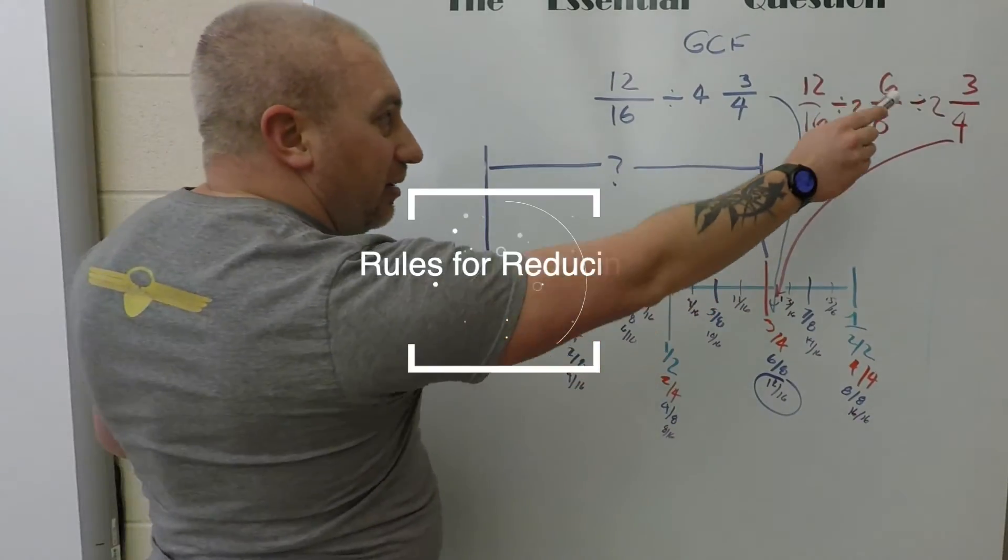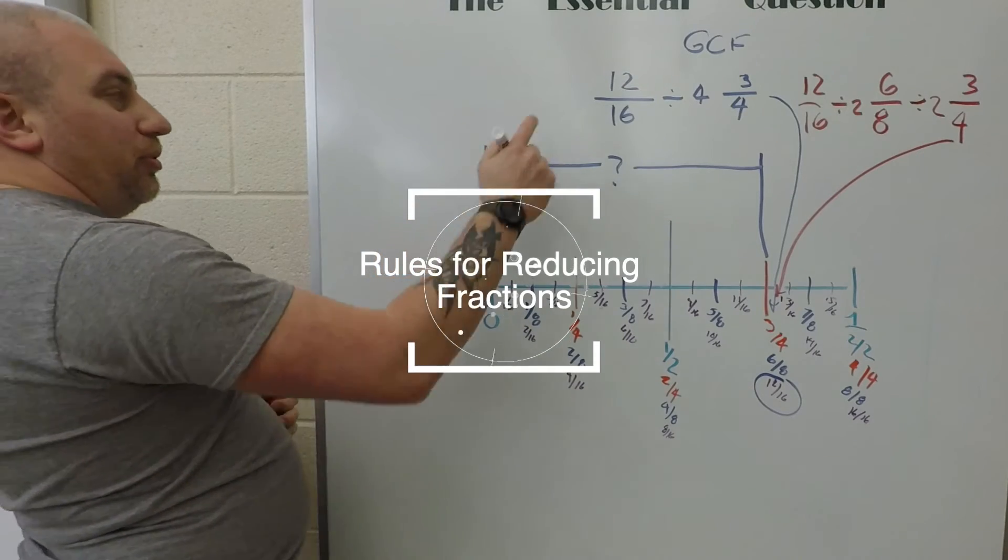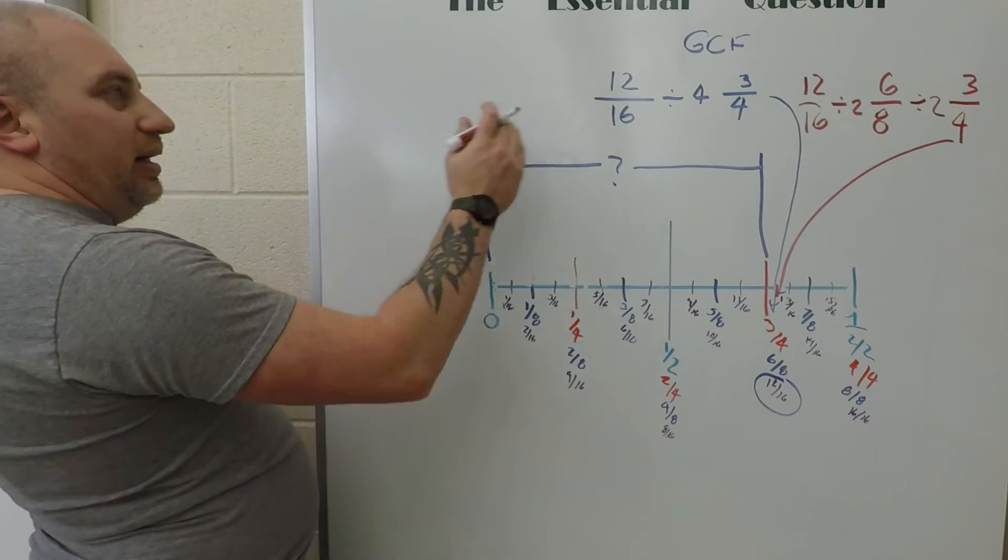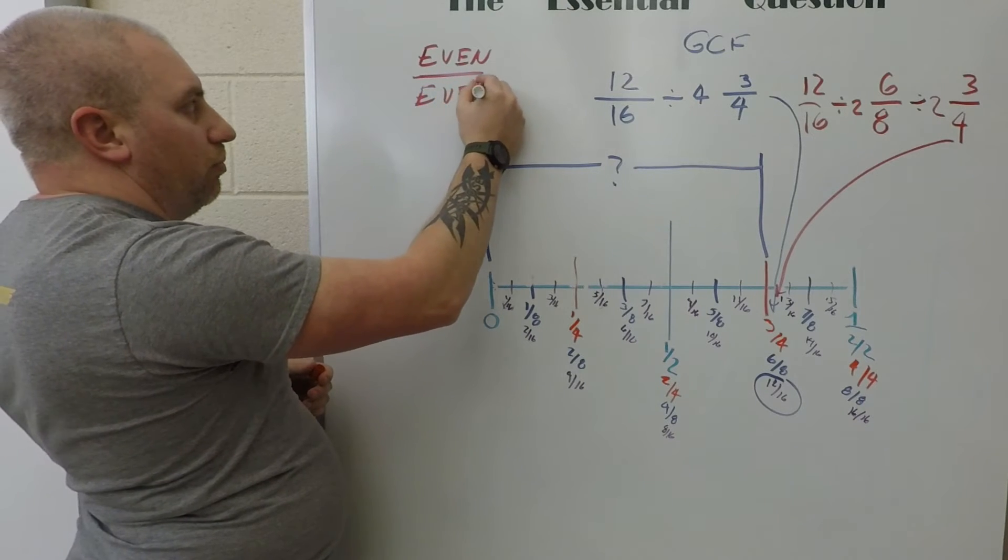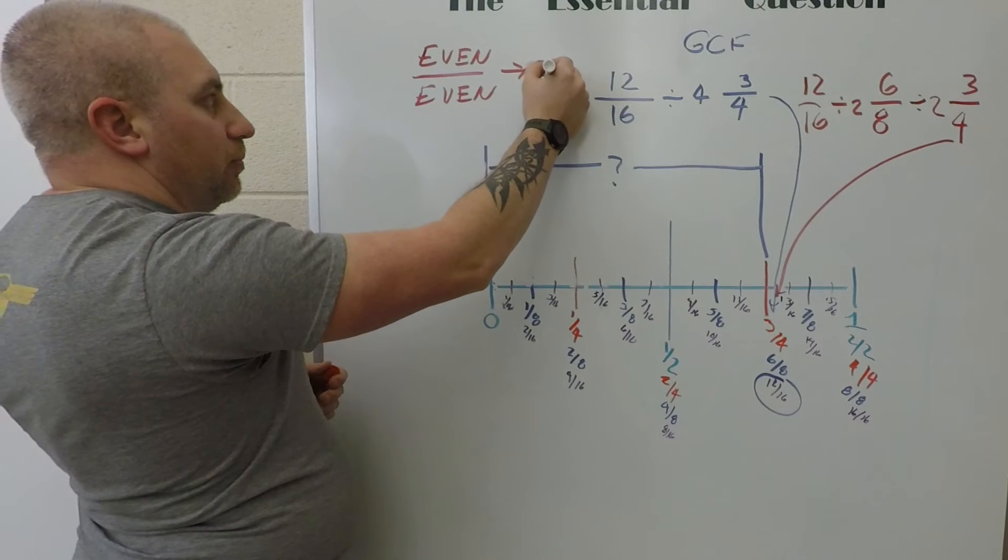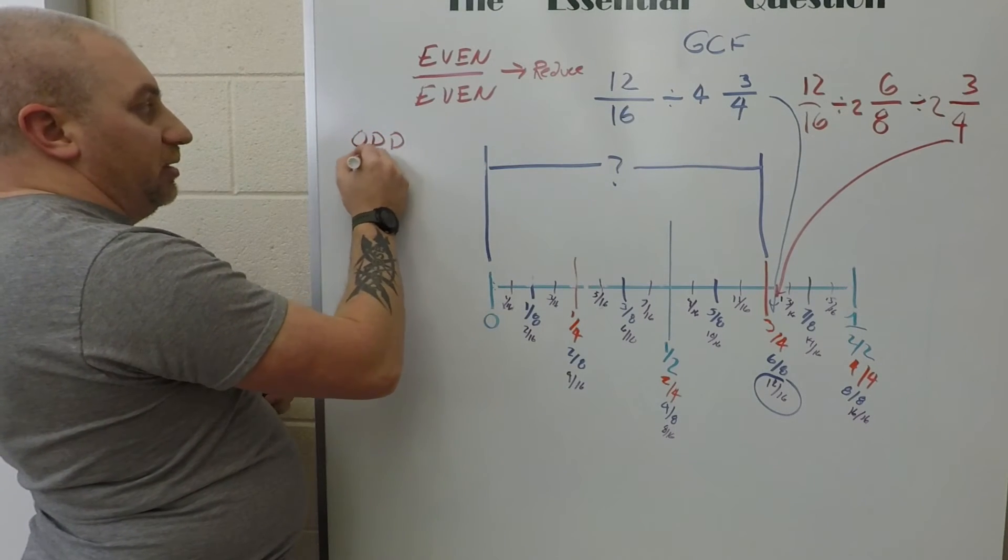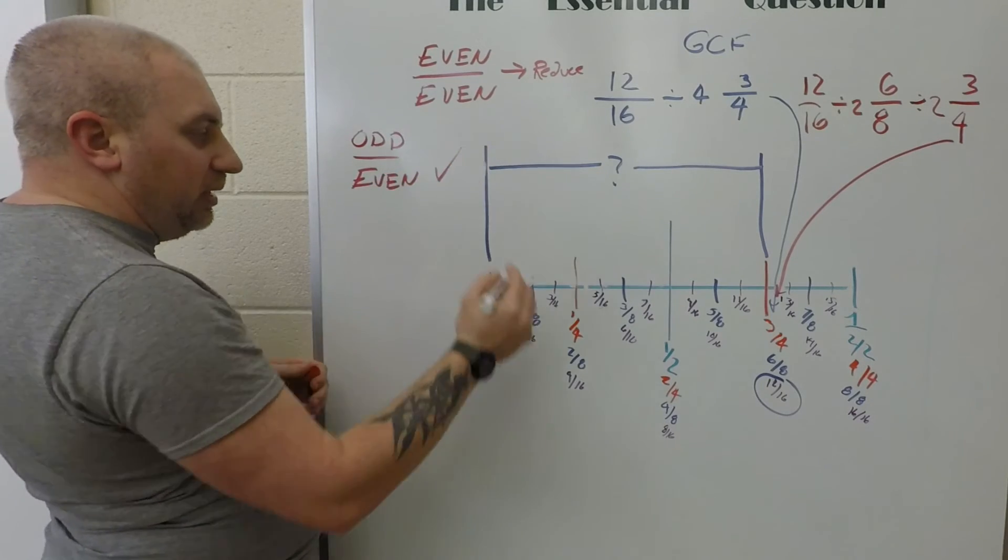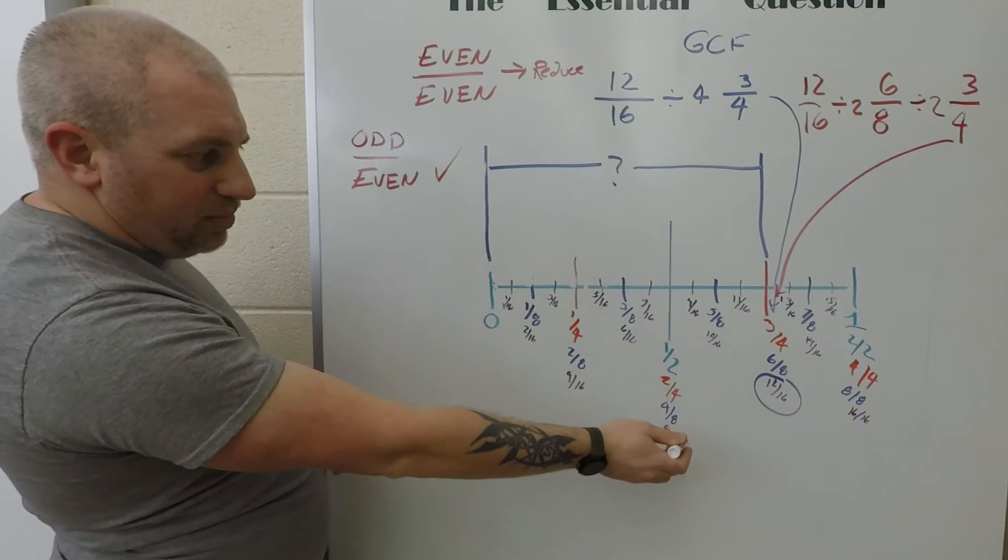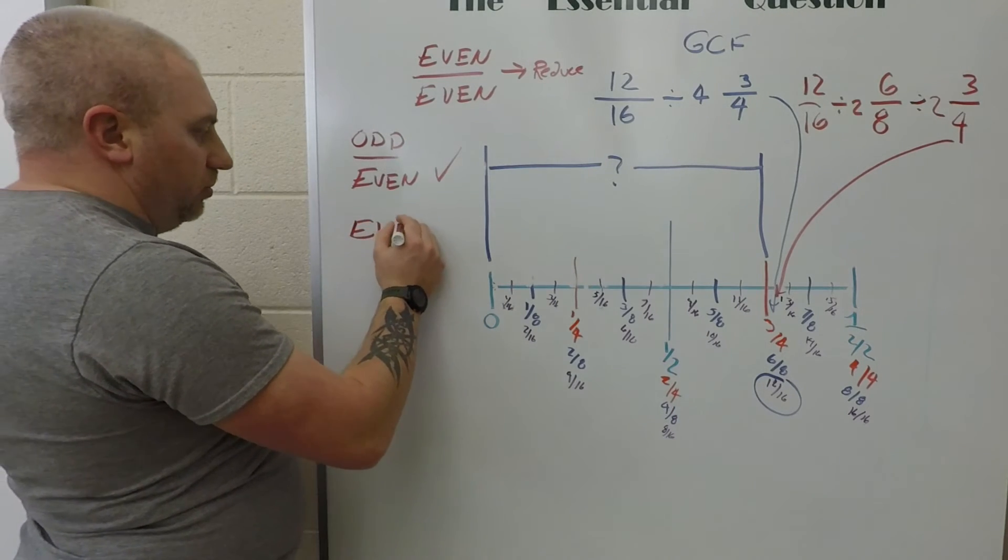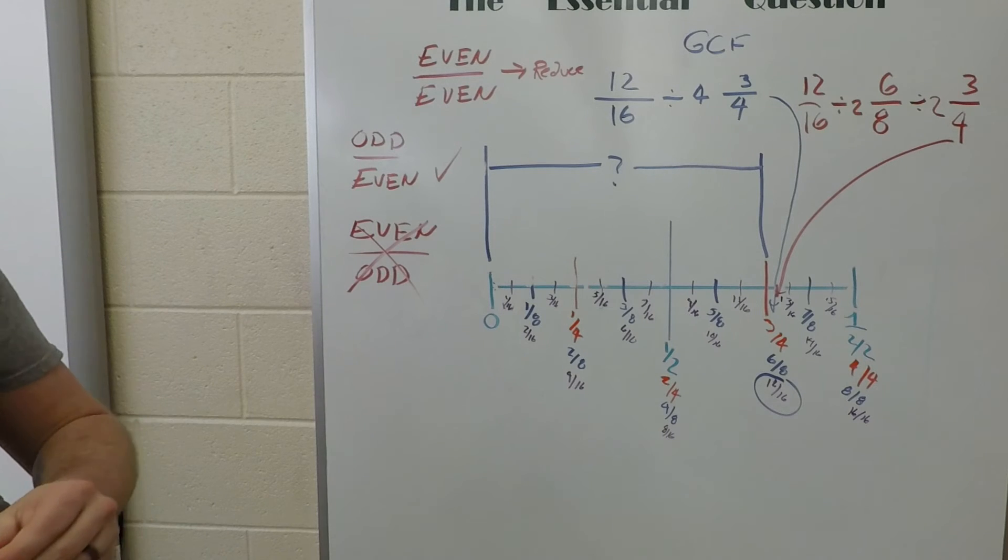Now that we have our fraction figured out and reduced, there's just a few rules I want you to remember about when and when not to reduce your fractions. It's really simple. We take our initial measurement, so 12 over 16, and take a look at it. If we have an even over an even number, we need to reduce every time. If we have something like an odd over an even number, you're done—there's no need to reduce it. You'll see there's nothing below it. If you have something like an even number over top of an odd number, you're doing something wrong. You should never have an even number over an odd number.